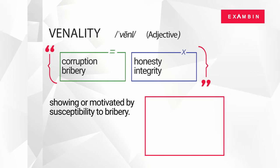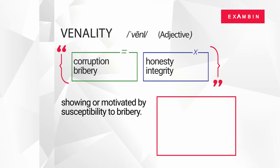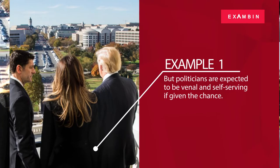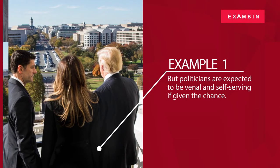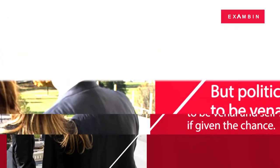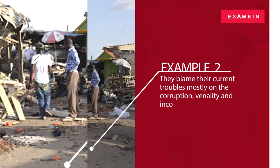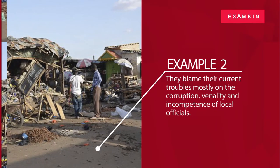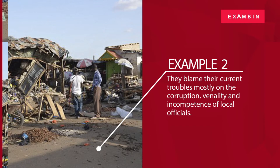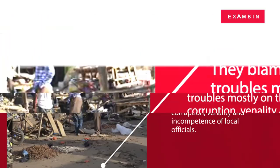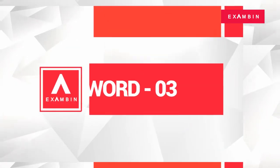We will see a few examples to understand the word venality better. Example one: politicians are expected to be venal and self-serving if given the chance. Example two: they blame their current troubles mostly on the corruption, venality, and incompetence of local officials.